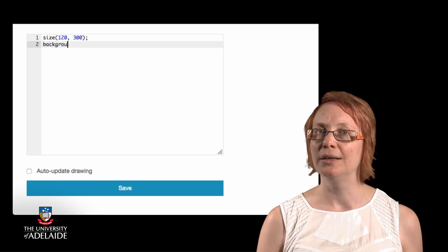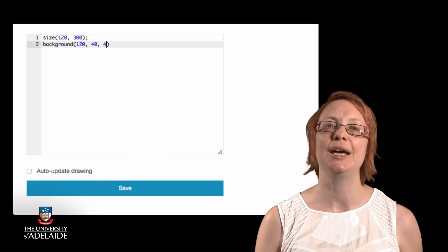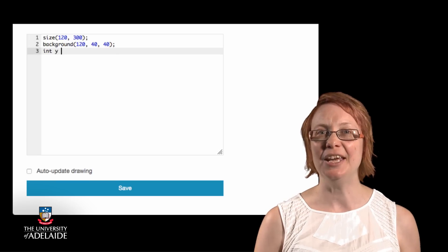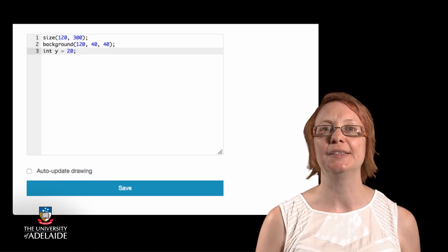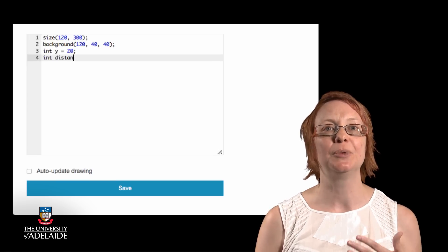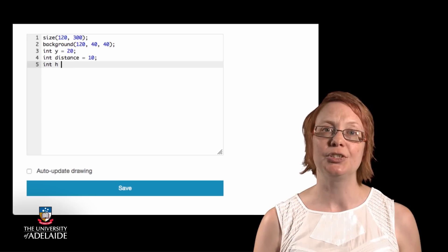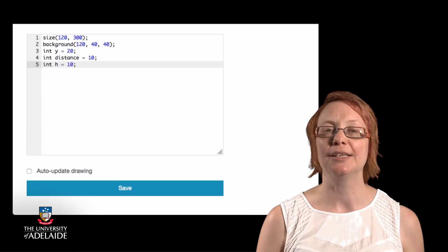One called Y represents the current Y coordinate value for where the rectangle is to be drawn. The next variable holds a value which represents the distance that we want to keep between each rectangle as we draw it, and the final variable, H, is the height of the rectangle, as we had used before.